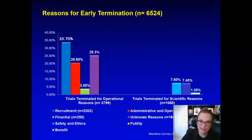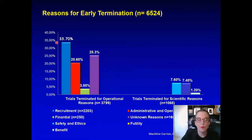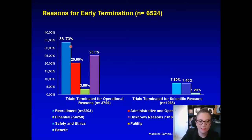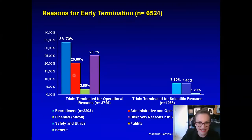When assessing reasons for trial termination, recruitment appears as the main reason: 33.7% of all terminated trials were terminated because of failure to recruit patients. This was followed by other administrative and operational reasons at 20%. It's clear that trial design and pre-organization settings are key to success.